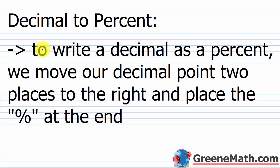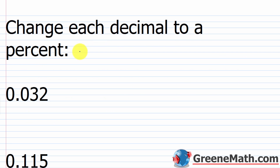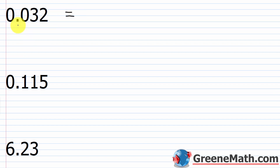Let's take a look at something a little bit more challenging — converting a decimal to a percent. To write a decimal as a percent, we just move our decimal point two places to the right and place the percentage symbol at the end. Let's look at this quick exercise. We're going to start out with 0.032. Moving the decimal point two places to the right gives me 3.2, and I put the percentage symbol after it. So 0.032 is equal to 3.2%.